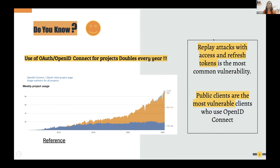OpenID Connect is a trending protocol in the market — its usage is doubling every year. OAuth2 is used for access delegation, and OpenID Connect is the standard protocol we use for Single Sign-On. The use of both of these protocols is growing year on year.